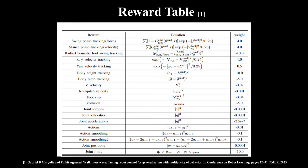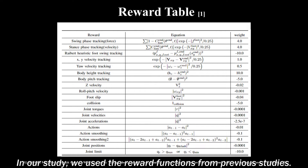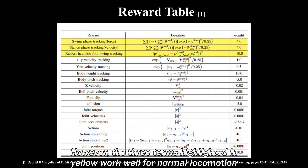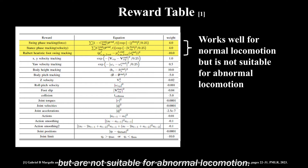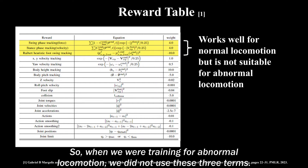In our study, we used the reward functions from previous studies. However, the three terms highlighted in yellow work well for normal locomotion but are not suitable for abnormal locomotion. So when we were training for abnormal locomotion, we did not use these three terms.